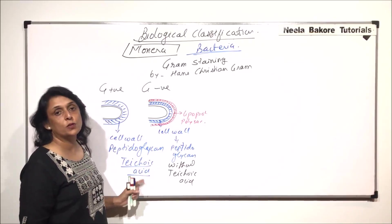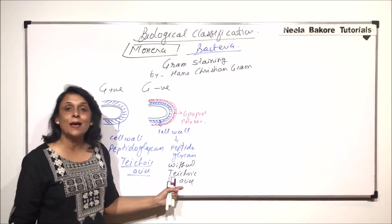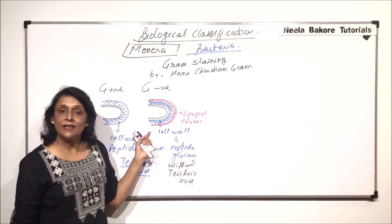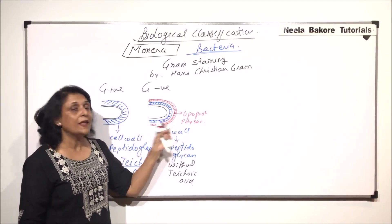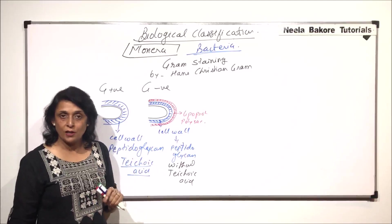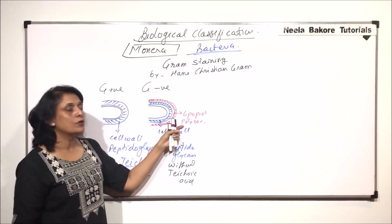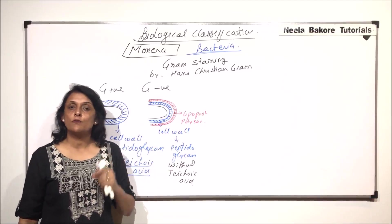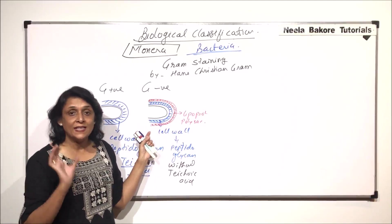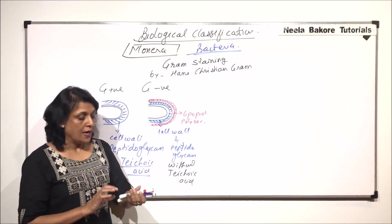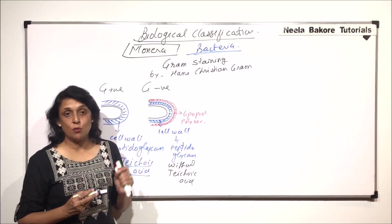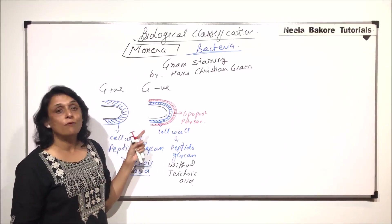The major difference is in the thickness and composition of the cell wall, which is mainly peptidoglycan. Teichoic acid is present in Gram positive but absent in Gram negative. Additionally, in Gram negative bacteria, outside the cell wall there is one more layer which is lipoproteinaceous in nature, containing lipoprotein, phospholipids, and polysaccharides.